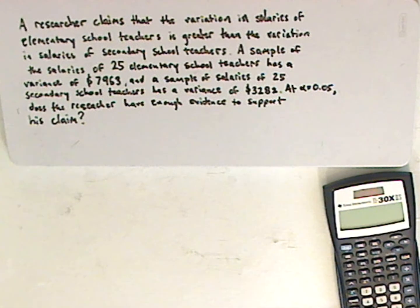At alpha equaling 0.05, remember that's your significance level, does the researcher have enough evidence to support his claim? So pause the video and see if you can try to use one of your own.